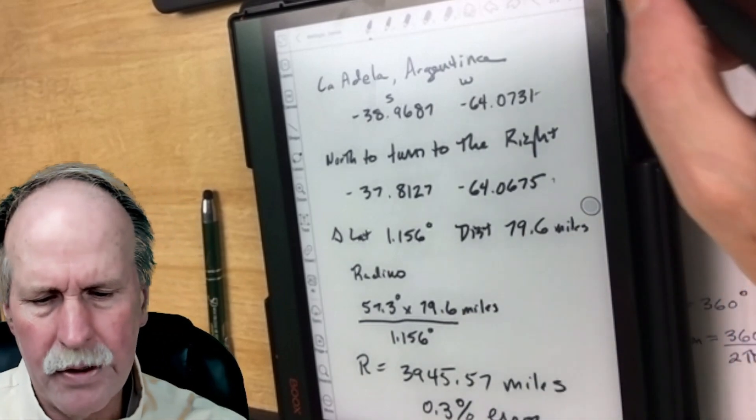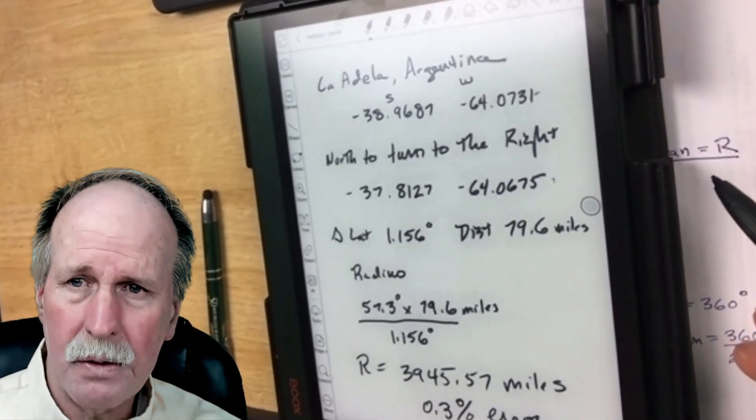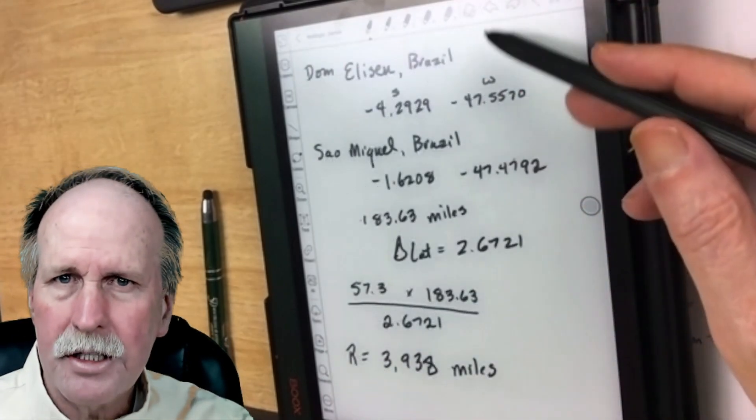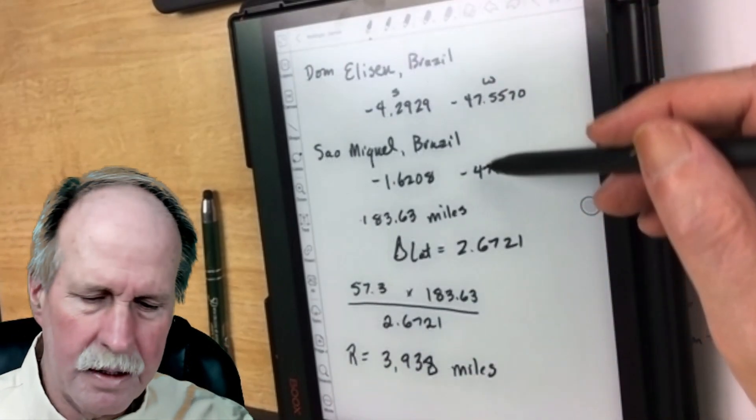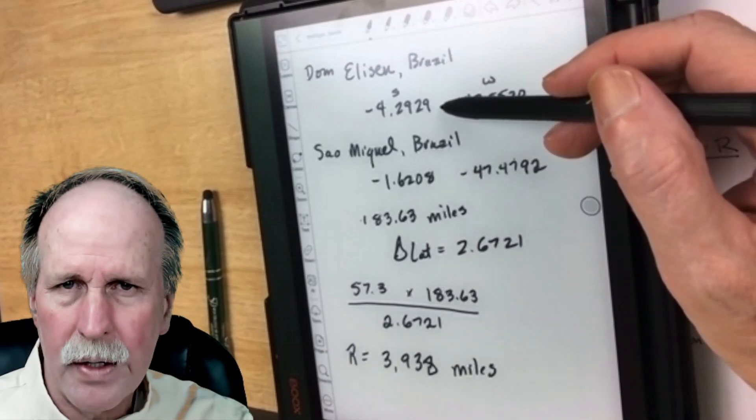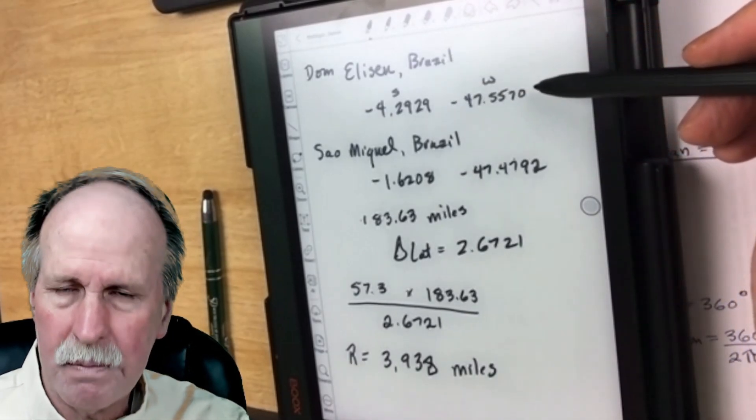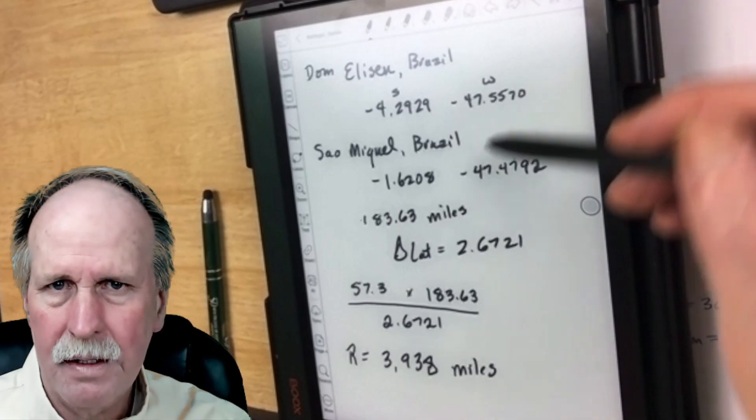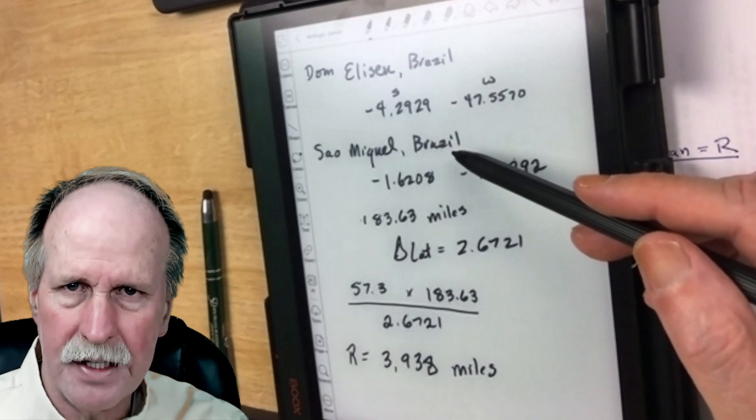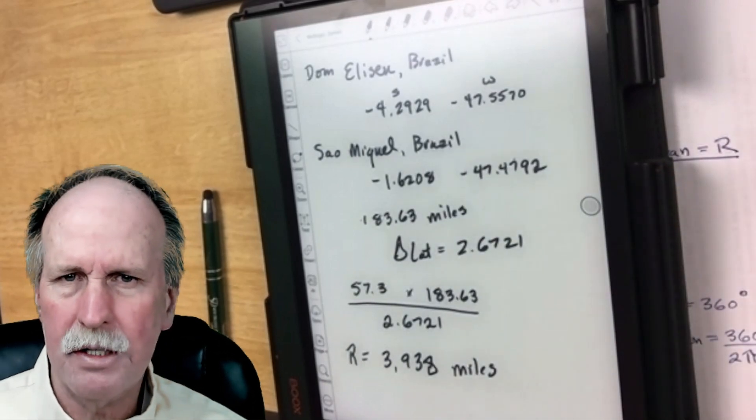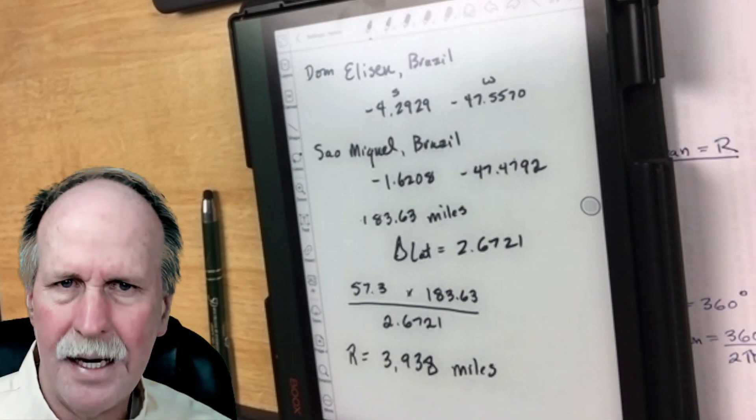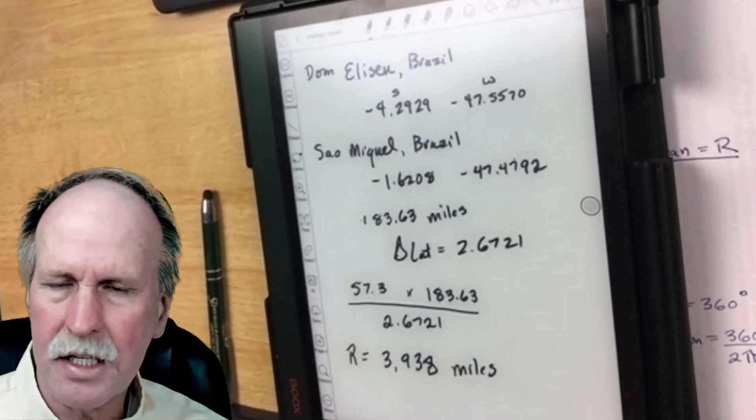Let's look at one more place. One was up around 39 degrees north, one's down around 39 degrees south. Let's look at the equator. So here are two locations in Brazil. You can look them up if you wish. One is Dom Elyson, and the coordinate is 4.2929 degrees south and 47.557 west. Likewise, here are the coordinates for São Miguel, Brazil, which is due south of it. The distance between those two points is 183.63 miles, and the change in latitude is 2.6721 degrees.